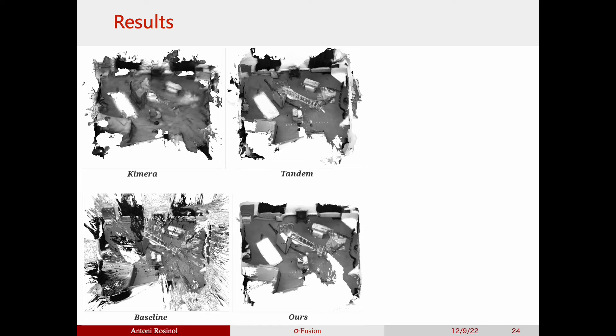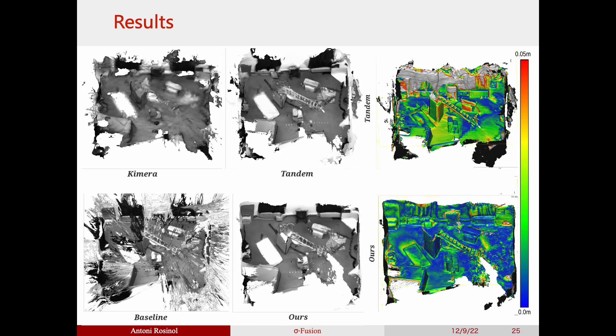To better see the difference between Tandem and ours, we color-code the mesh according to the error. As we can see, Tandem tends to inflate the geometry, leading to worse estimates.